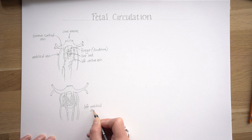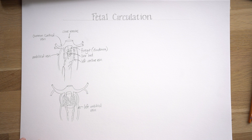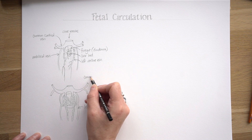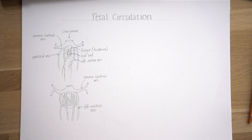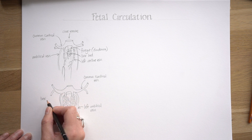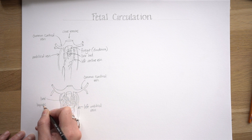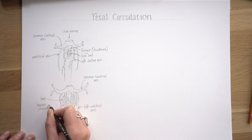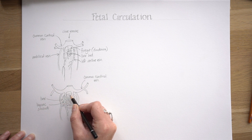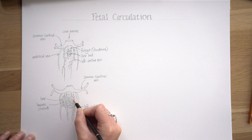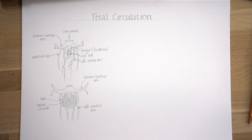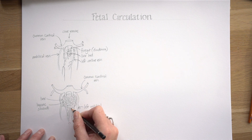This is all happening fairly swiftly. The image at the top shows the embryo at about four weeks of development and the lower image is at about five weeks. In that lower image you're starting to get connections between the right and left vitelline veins and those hepatic sinusoids inside the liver.